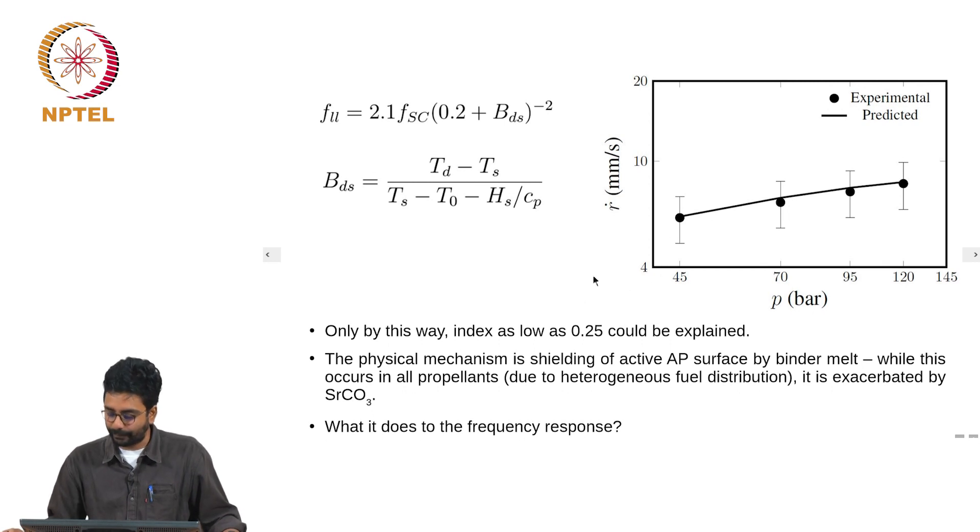Here I have shown prediction for one such composition, and the index of this propellant is about 0.25. Index as low as this can be explained only by additionally accounting for the shielding of the heat flux reaching the surface because of the binder melt that is covering the surface. The physical mechanism is shielding of active AP surface by binder melt. While this occurs in all propellants—for example, small particles which are fuel-rich can have binder melt even in regular compositions due to the heterogeneous fuel distribution—it is made worse by strontium carbonate.